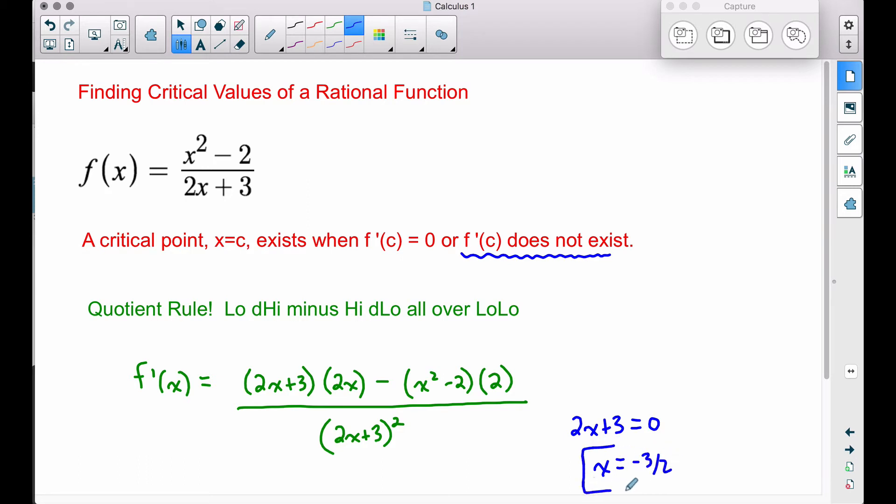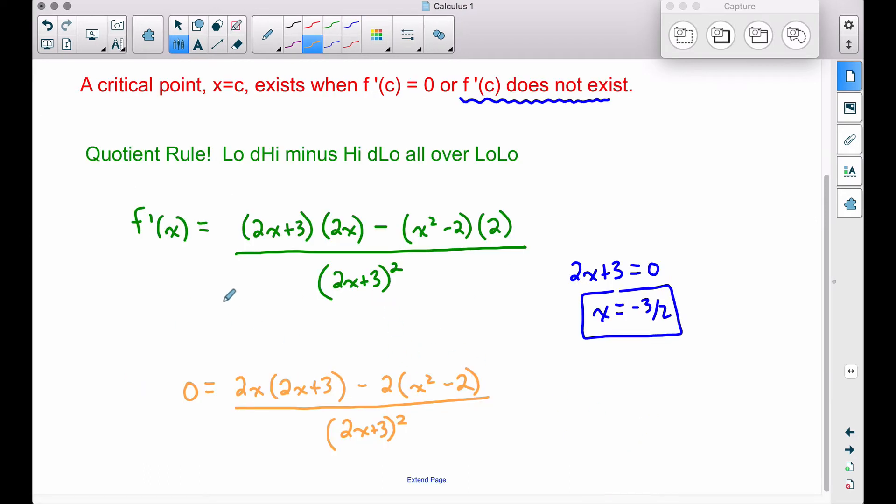That is one of our c values. I'm just going to leave it as x though, it doesn't really matter. Negative 3 halves is a critical point or a critical value for this function. So now let's focus on what makes this derivative equal to zero. That's where we can determine our other critical value or critical values.